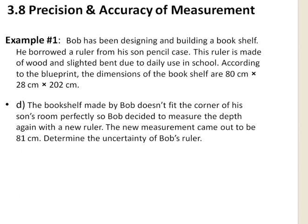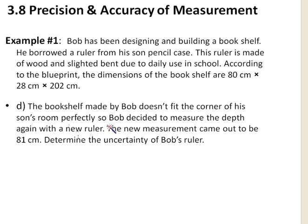Looking at uncertainty now, they say the bookshelf made by Bob doesn't fit the corner of his son's room perfectly, so Bob measured the depth again with a new ruler. The new measurement came out to be 81 centimeters. Let's determine the uncertainty of Bob's ruler.